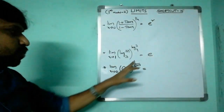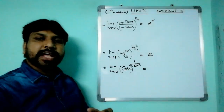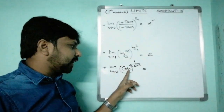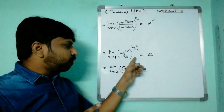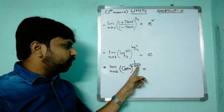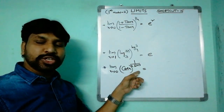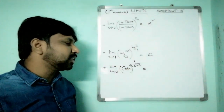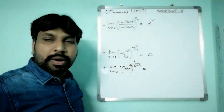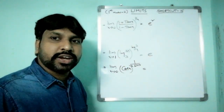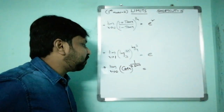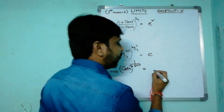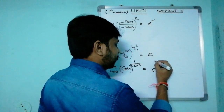Third example: limit x tends to 0 of (cos x)^(1/(x·sin x)). Substituting x = 0: cos 0 = 1, and 1/(0·sin 0) = 1/0 = ∞. So this is the 1^∞ model.